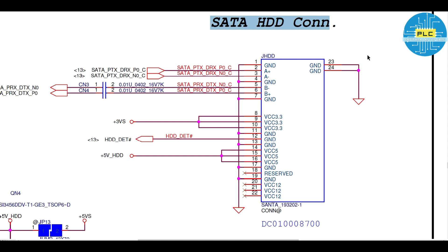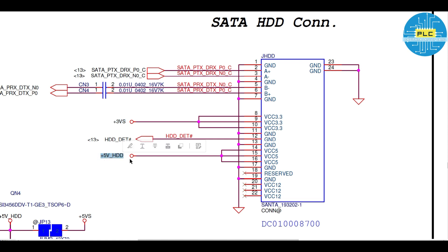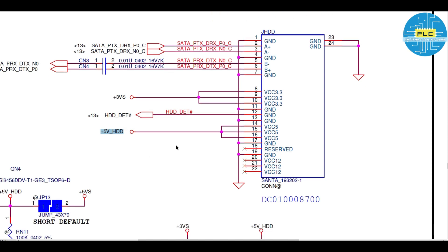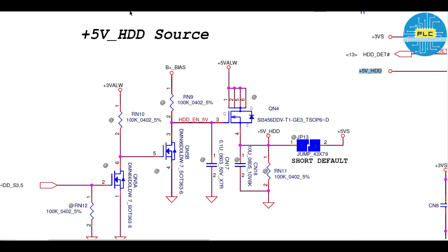We need to focus on some important pins. First, any circuit must have voltage. So we look at 3VS — pin numbers 8, 9, and 10 should have 3.3 volts, that is 3VS. Second is plus 5V HDD. This voltage is generated through a specific logic circuit.